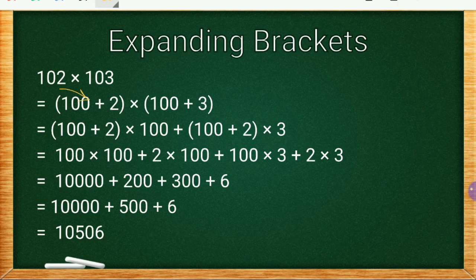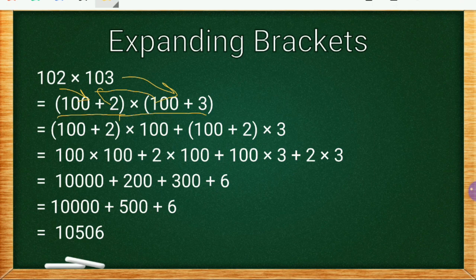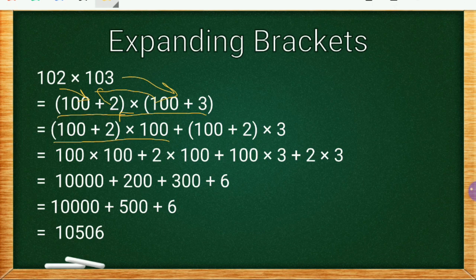Now separate the multiplications. First multiply 100 with 100 plus 2, then 3 with 100 plus 2. That is (100 + 2) × 100 in the first part, then (100 + 2) × 3 in the second part.